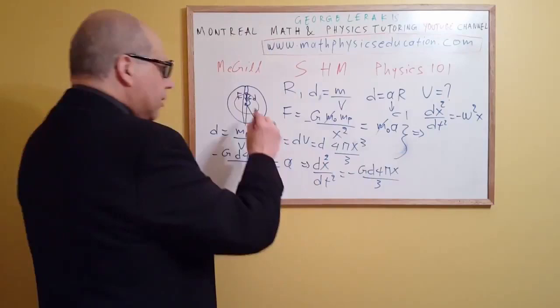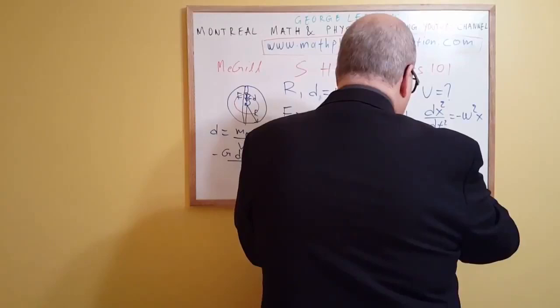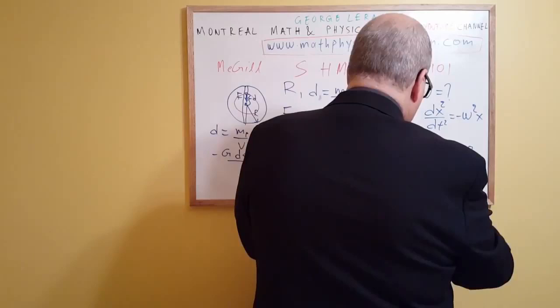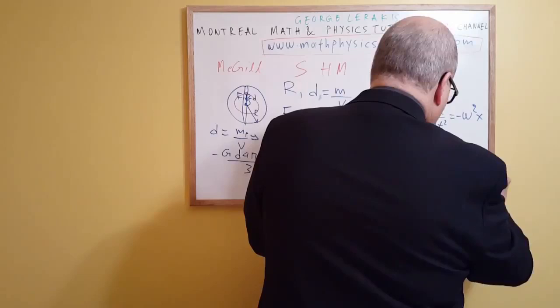Comparing this with the standard SHM equation d²x/dt² equals minus ω²x, we can identify omega. So omega squared equals G times density times 4π over 3, which means omega equals the square root of G·ρ·4π/3.